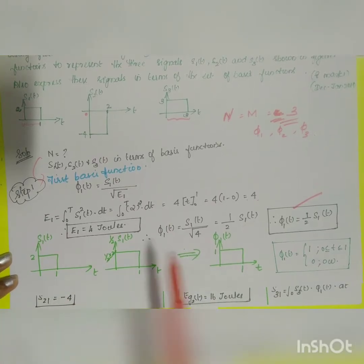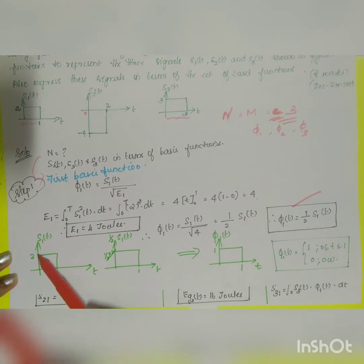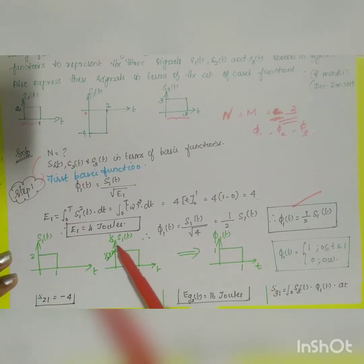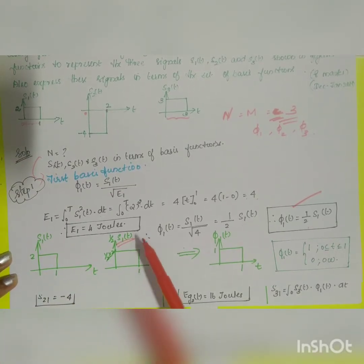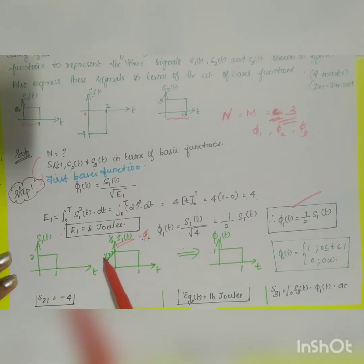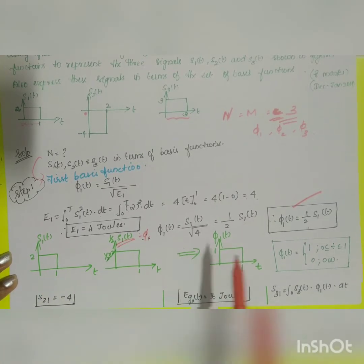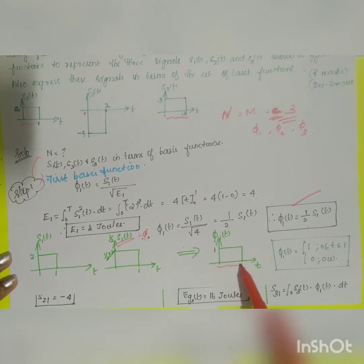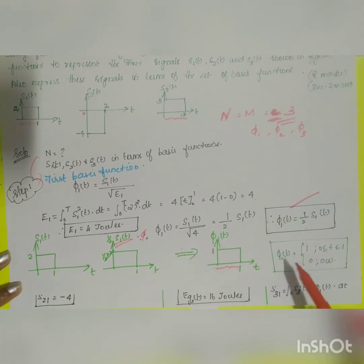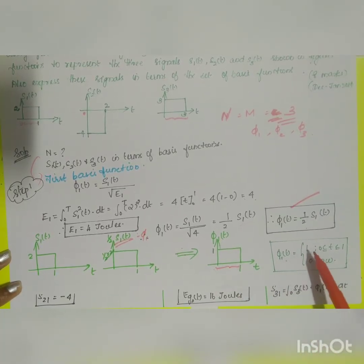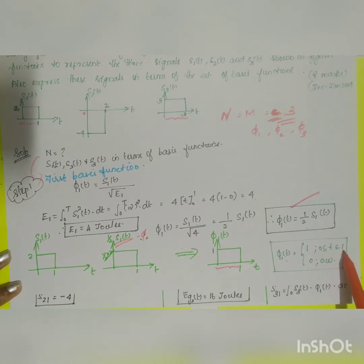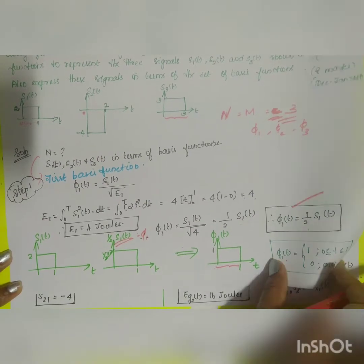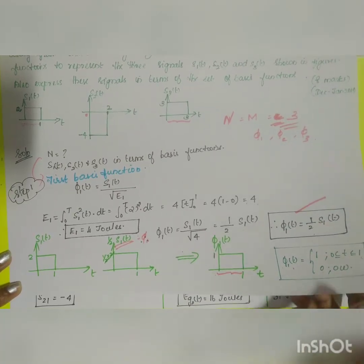Diagrammatically, φ1(t) = s1(t)/2. Since s1(t) has amplitude 2, multiplying by 1/2 gives amplitude 1. So φ1(t) has amplitude 1 and time duration 0 to 1 — unit energy. We write: φ1(t) = 1 for 0 ≤ t ≤ 1, and 0 otherwise.